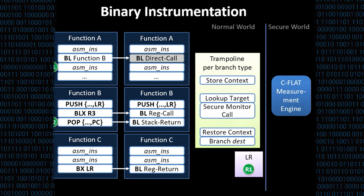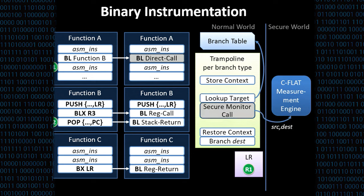We have trampolines per branch type, meaning a dedicated trampoline for a direct call. When this trampoline is executed, we first store the execution context, we look up the target based on that link register which has been set before based on a branch table. We then invoke a secure monitor call to call the measurement engine. The measurement engine receives source and destination address of the next branch and then performs the hash calculation. Finally, we restore the context and branch to the destination.